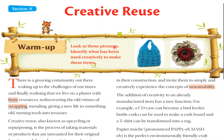Look at these pictures. You need to see all the pictures and identify what has been used creatively to make these items. These items have been made with waste things — things that are no longer useful. You need to identify which waste things have been used in these items. Now let's understand the chapter line by line.